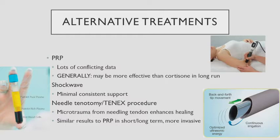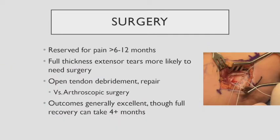PRP is probably effective if done well and in the right patient — probably more effective than cortisone, but it takes a long time to work. Tennis elbow is probably where the best data is for PRP, though there are still conflicting studies. Shockwave and needle tenotomy are more or less comparable — the literature is all over the place, and PRP probably has the best evidence. Surgery, at least in my practice, is reserved for patients with pain for 6 to 12 months who may have a full tear on MRI. We do open debridements and repair the tendon back to the bone. Patients often wait about 4 to 5 months after surgery for full recovery.